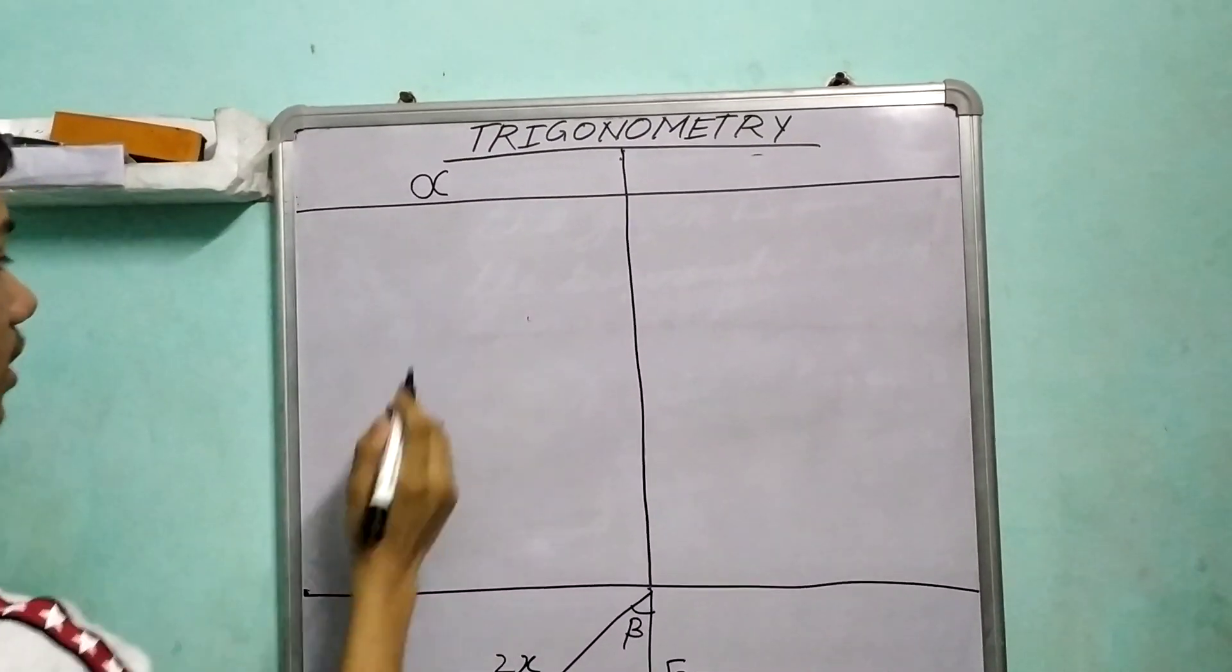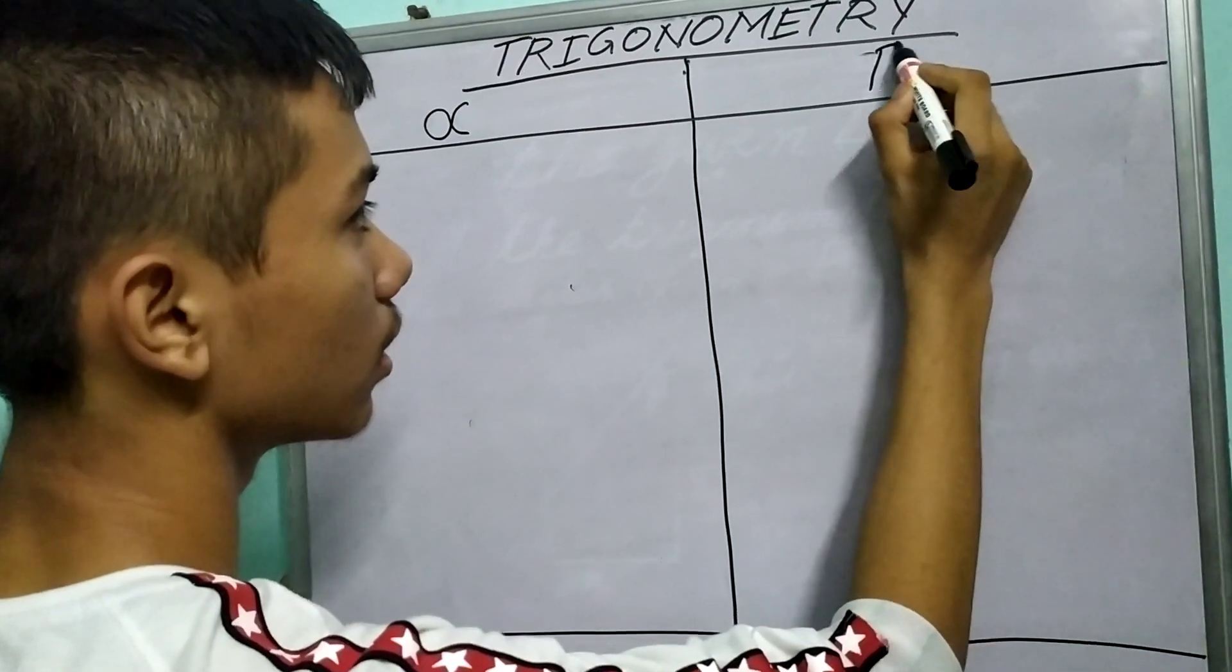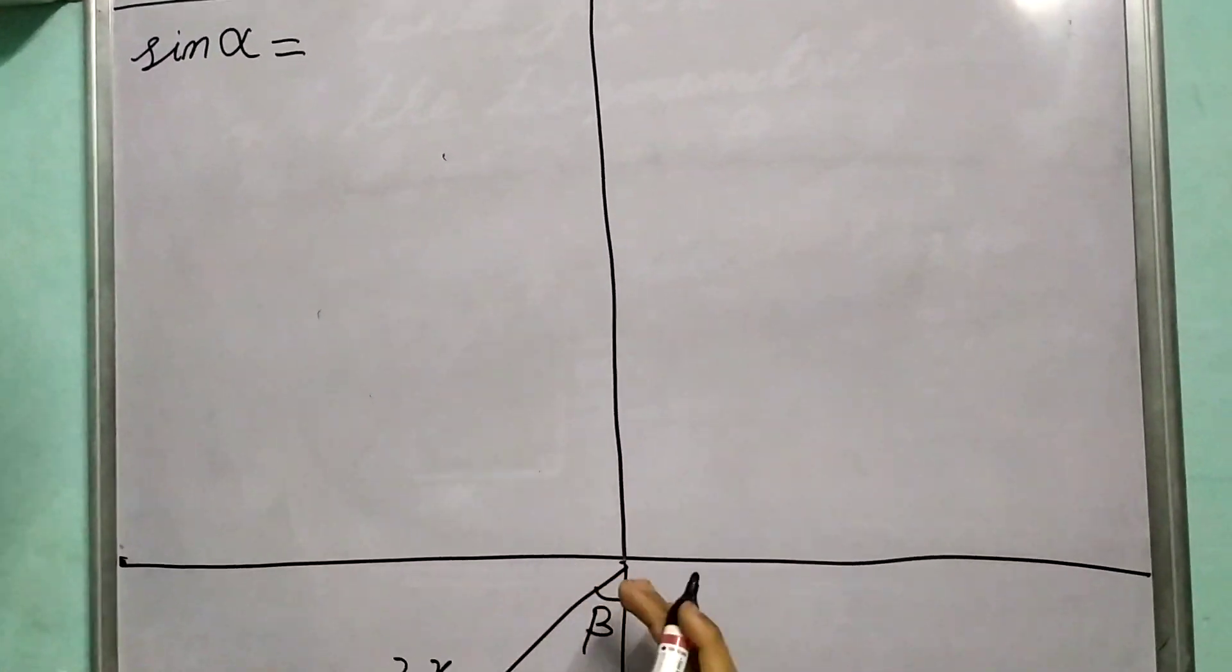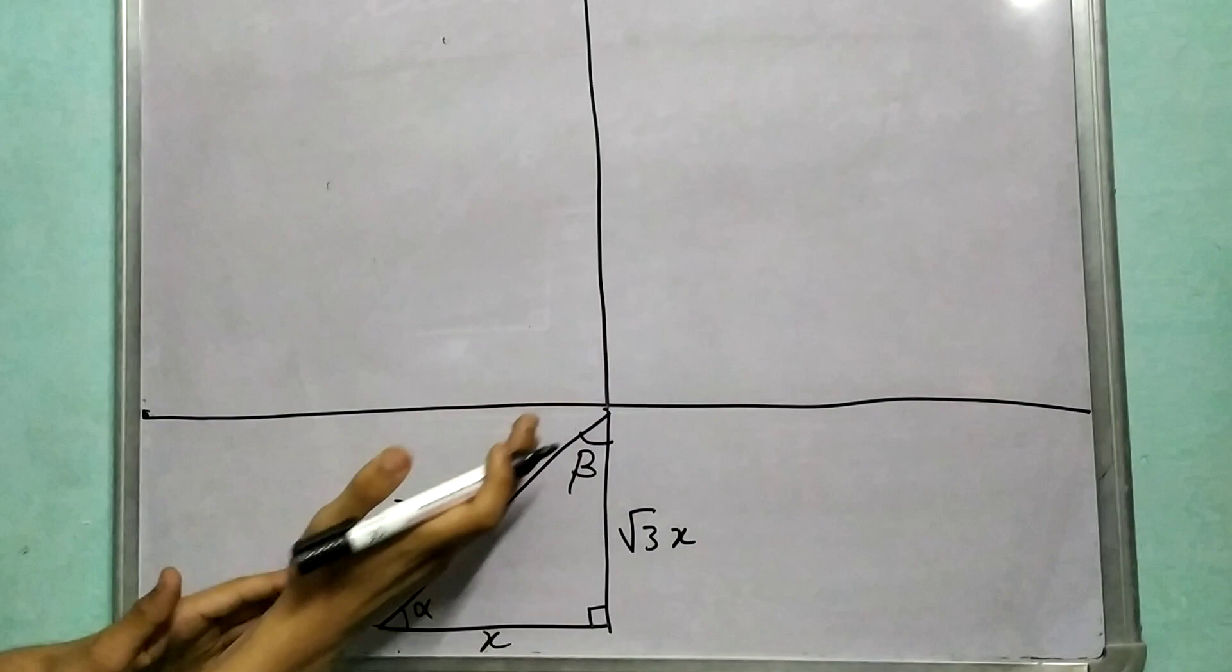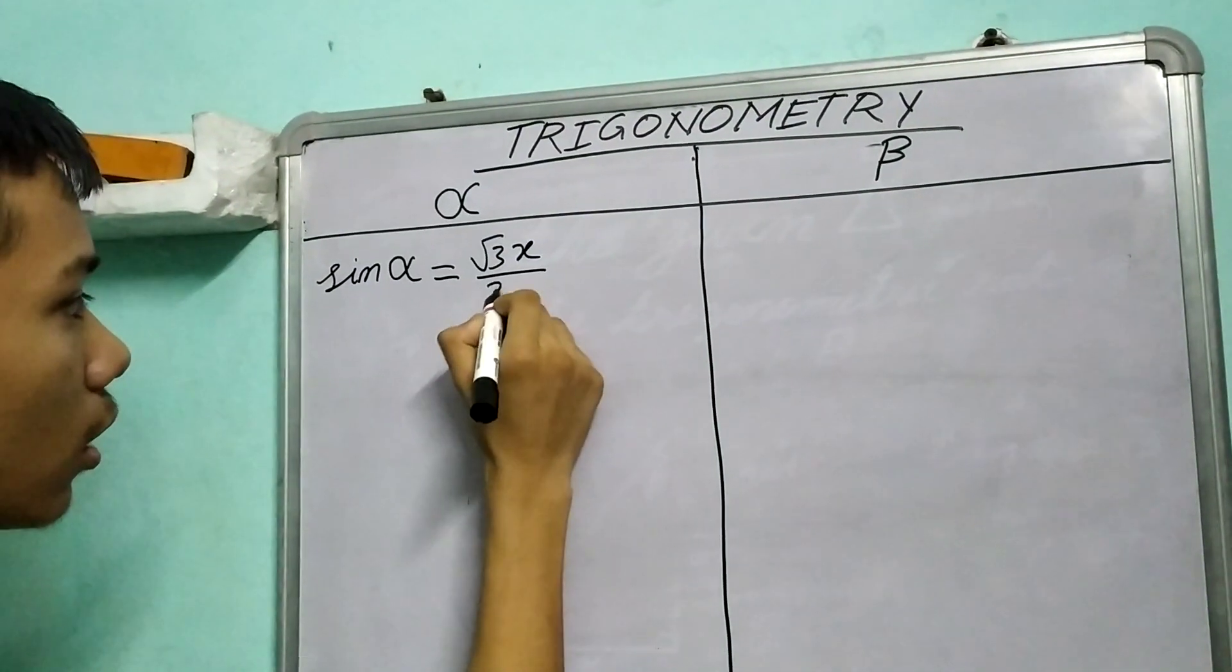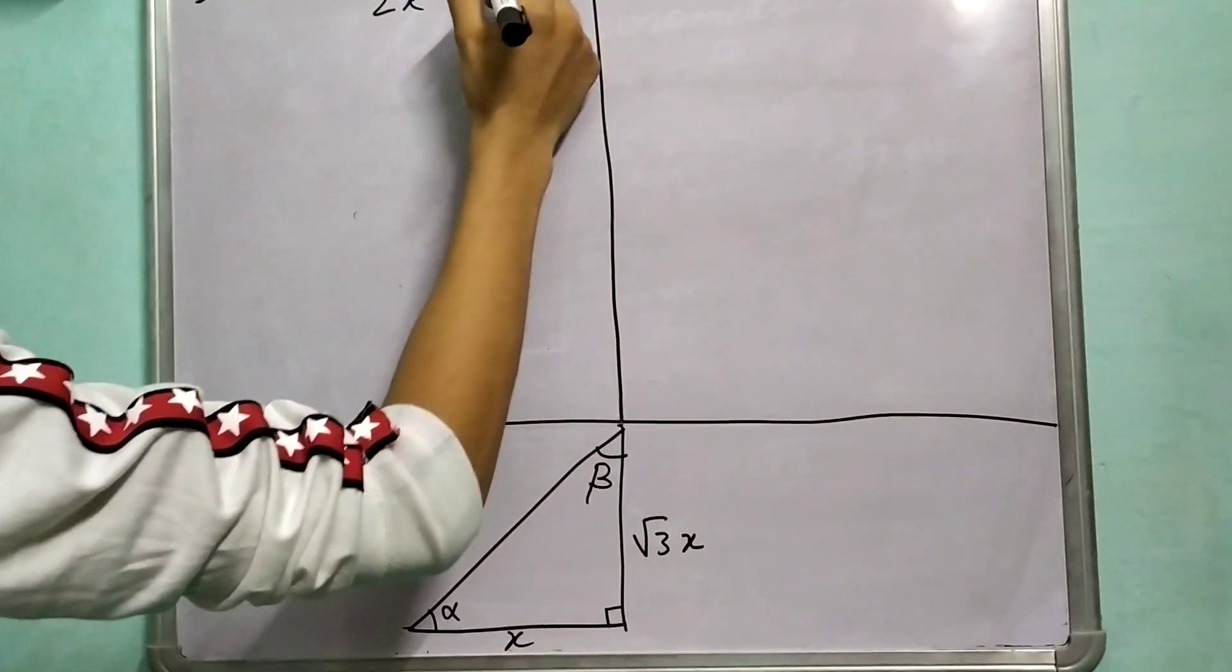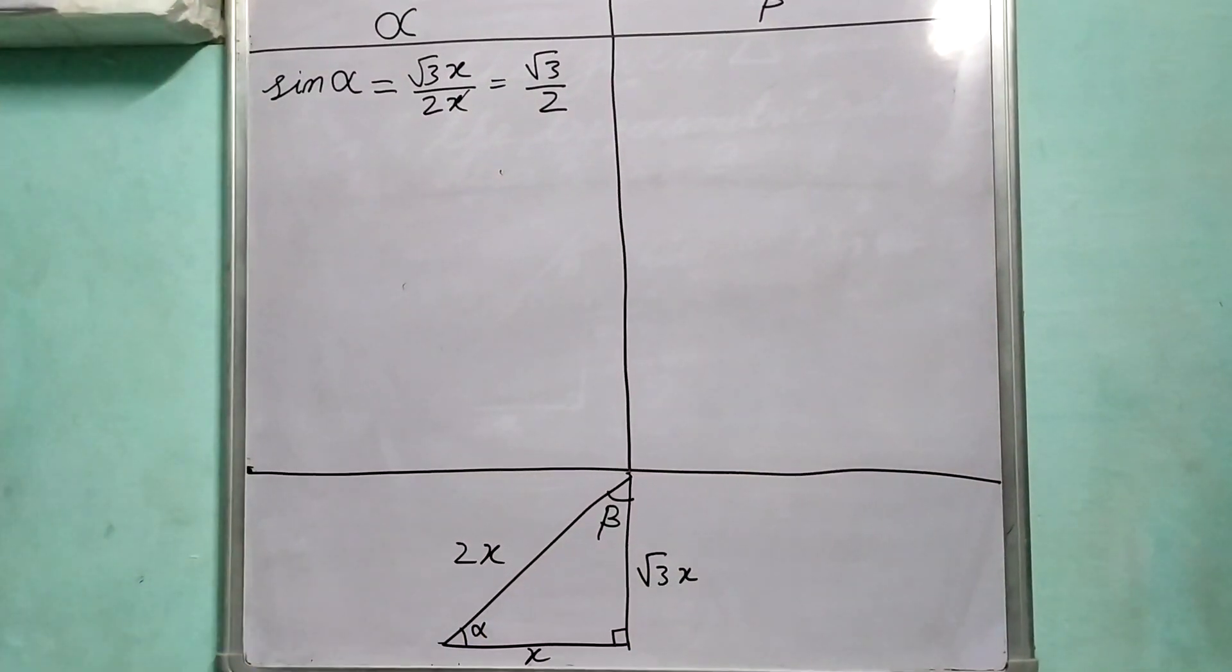In this table, we're going to solve for α and β. What will be sin α? Sin α is perpendicular/hypotenuse. For α, √3x is the perpendicular and 2x is the hypotenuse. So sin α = √3x/2x. The x's cancel out. This is why we don't require units—centimeters, meters, kilometers, whatever be the case. The values of these ratios remain constant. So sin α = √3/2.